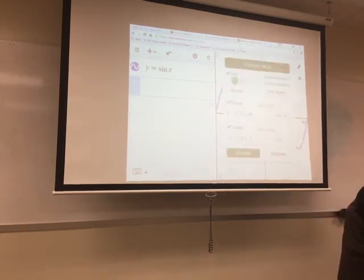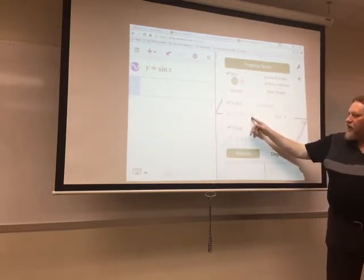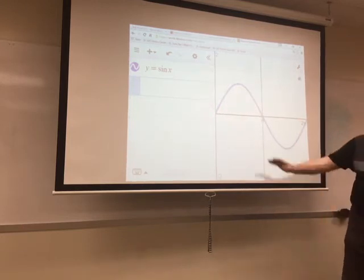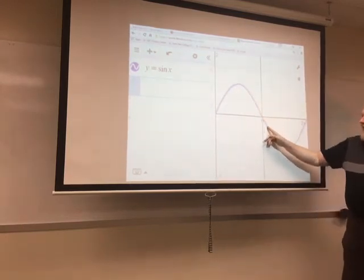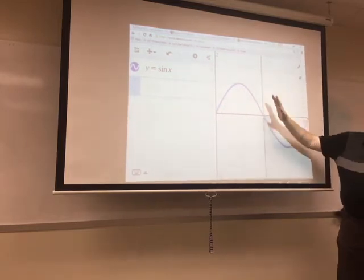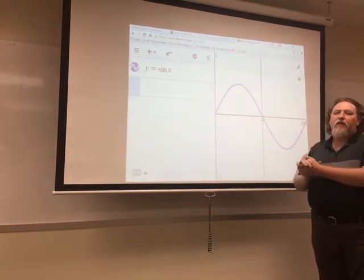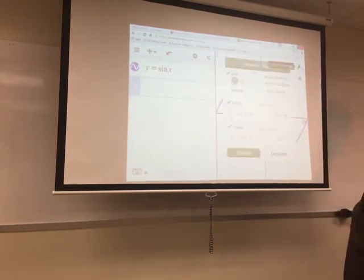So again, if I go over here and I adjust my viewing window so that my x's go from 0 to 2 pi, then I see just 1 period from the middle to the top, back to the middle to the bottom, and then back to the middle again, 1 complete cycle. And most of the time in class we're only going to draw 1 complete cycle. But you need to always remember that we could keep going.